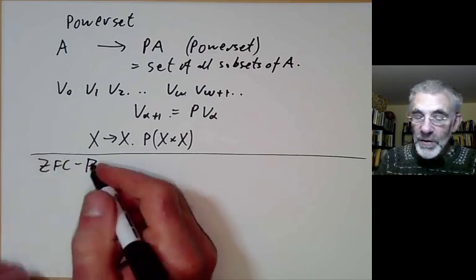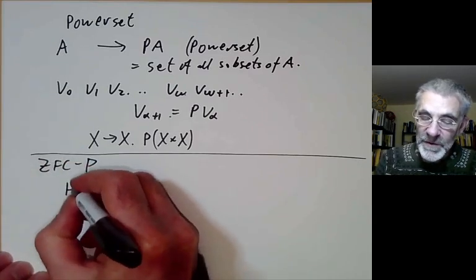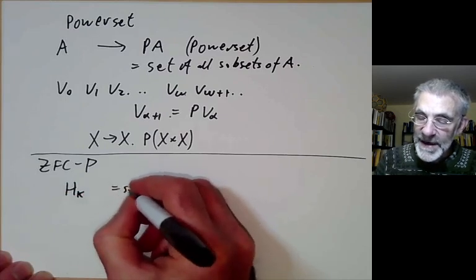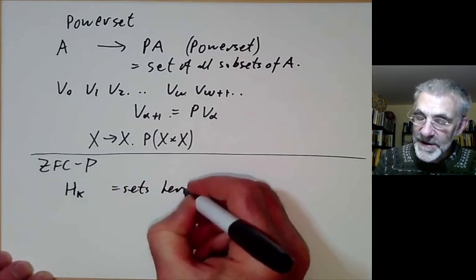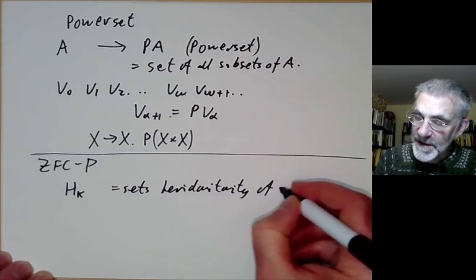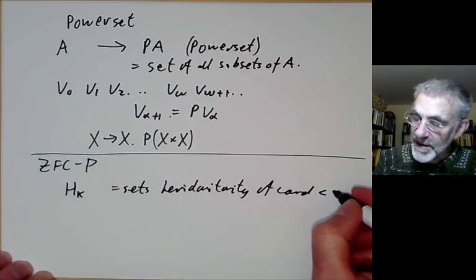Well there are lots of models of this. You can take the model H kappa, which is the sets that are hereditarily of cardinality less than kappa.